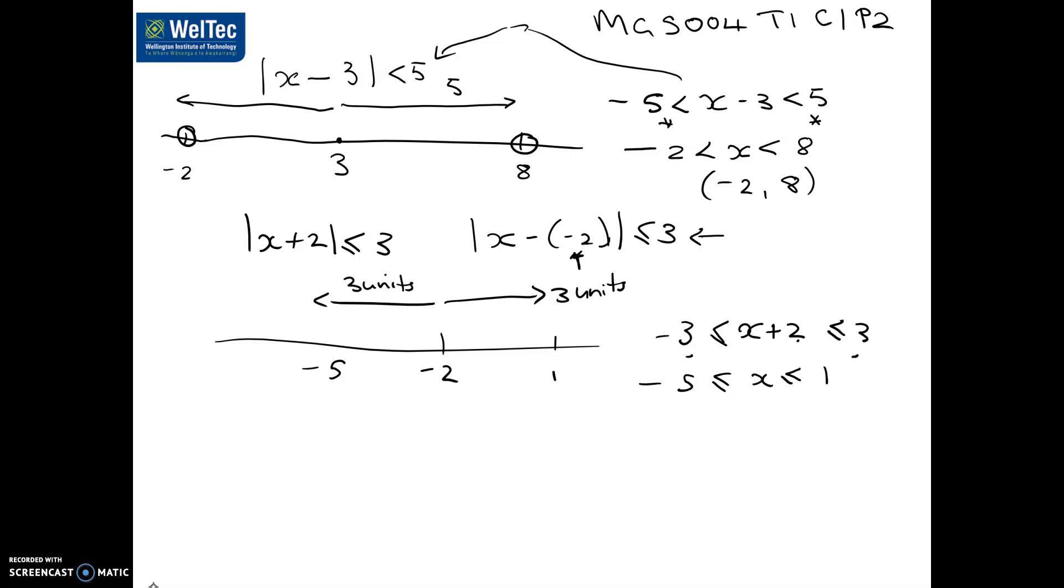Because it's less than or equal to, we're going to include 5 and we're going to include 1. So it's different from the first example where we didn't include negative 2 or 8. So this is what we call a closed interval.